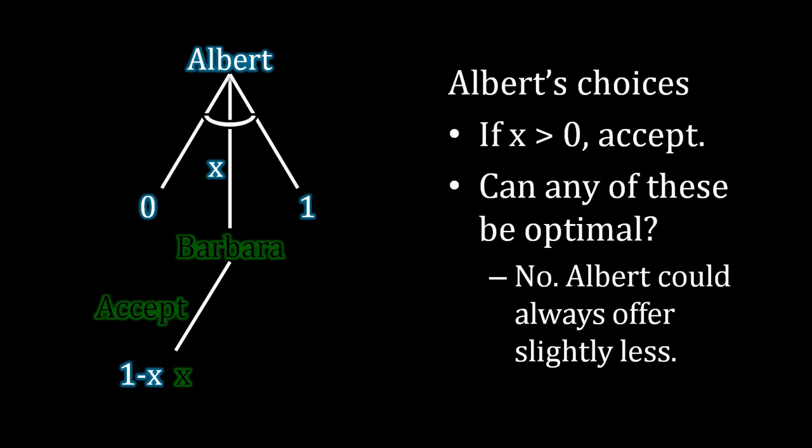But offering Barbara 0.05 and trying to keep 0.95 for himself is not optimal either, because he could once again halve that offer to Barbara. So instead of offering her 0.05, he could offer her 0.025, and now he's going to receive 0.975, which is better for him than it was before. But we can repeat this logic infinitely. So any value that is strictly greater than 0, Albert could halve, and that would still result in Barbara accepting but would leave strictly more for Albert to keep for himself. So as a result, there is no optimal strategy where Albert offers Barbara a strictly greater than 0 percentage of that surplus.